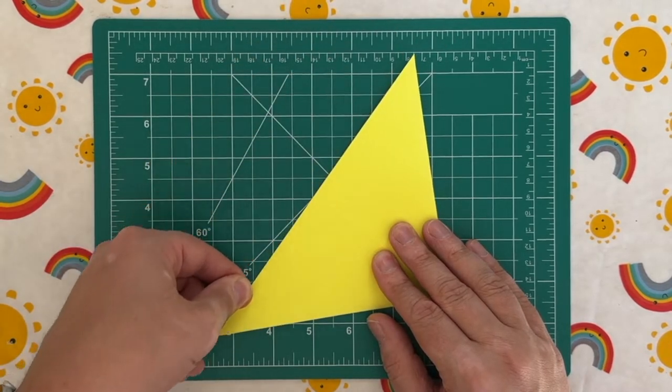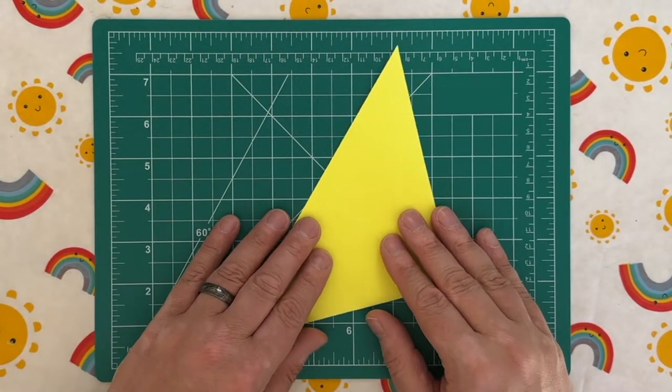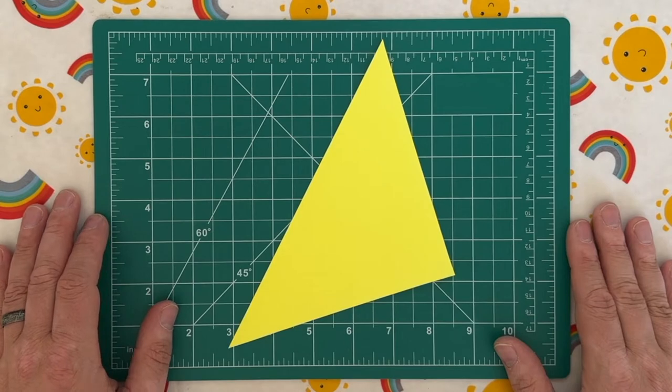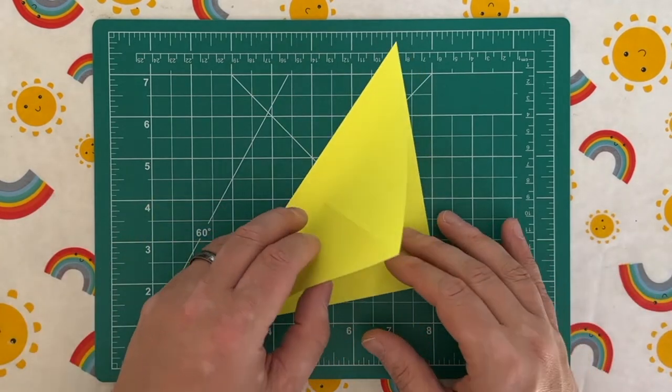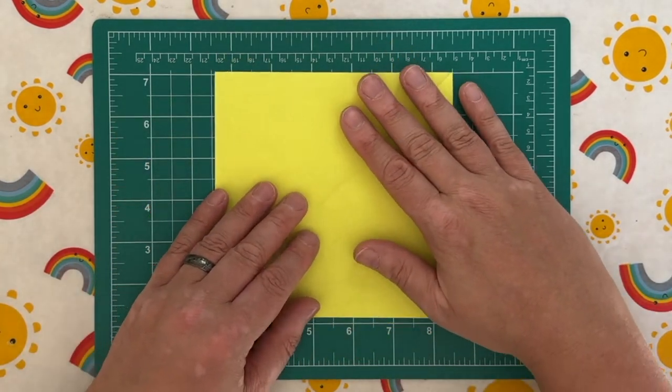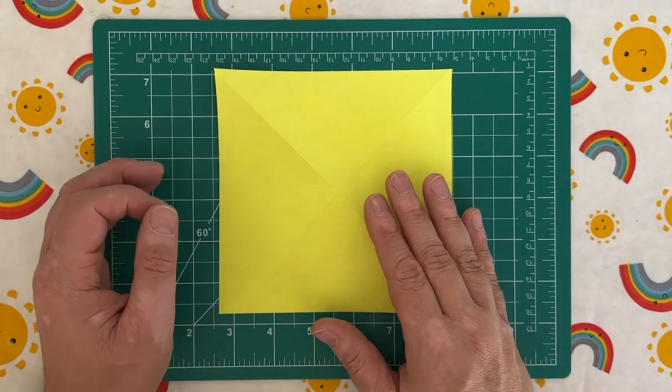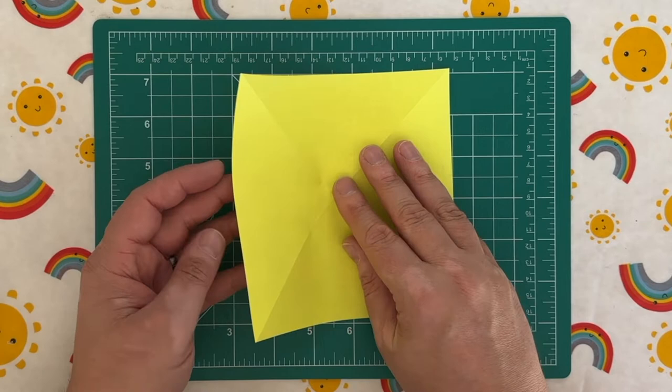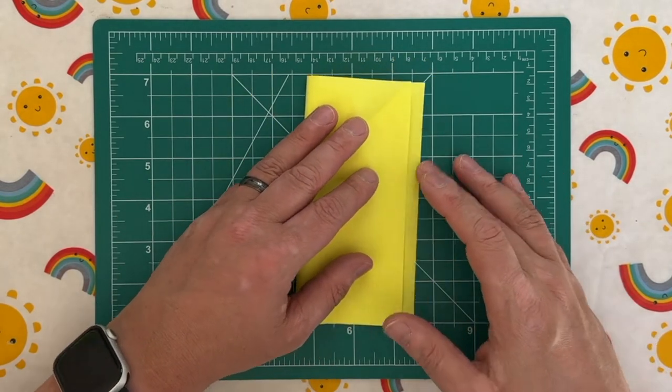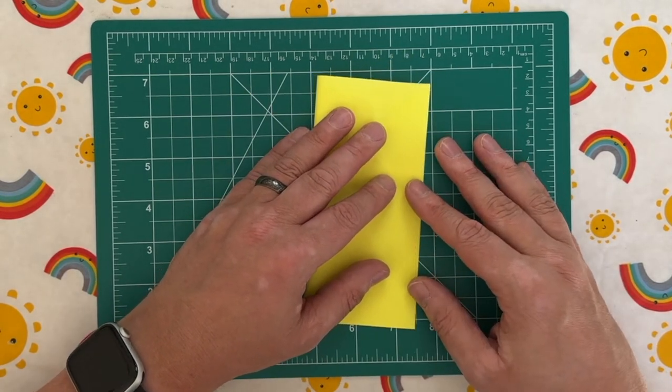Use the back of our nail to flatten that crease, then open up and then flip over. And then we need to fold halfway across like so.